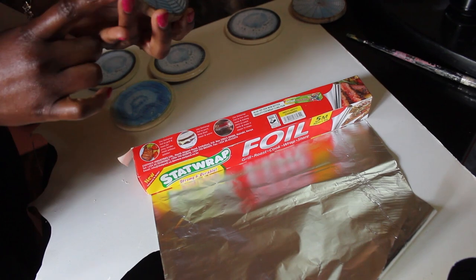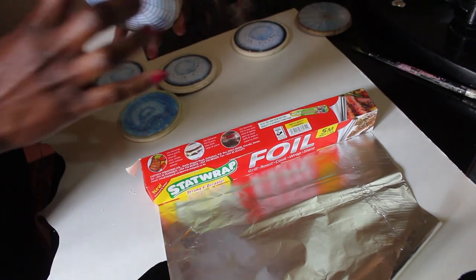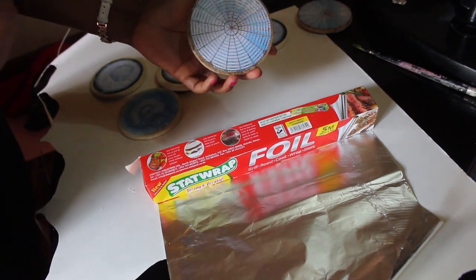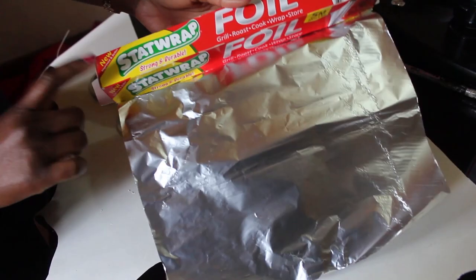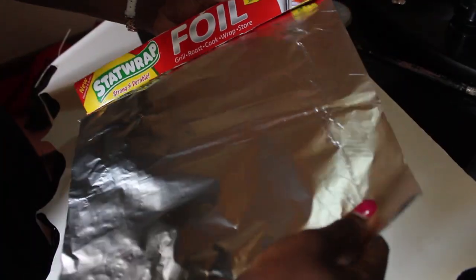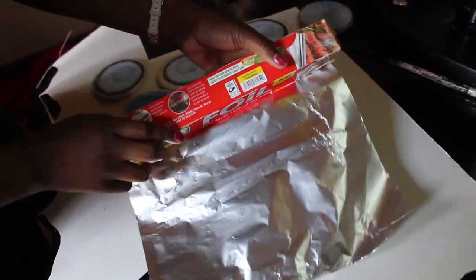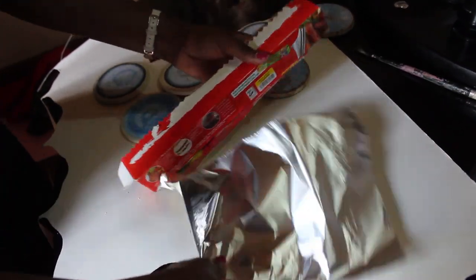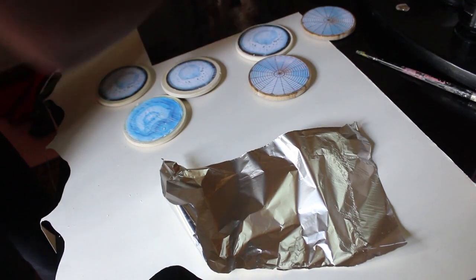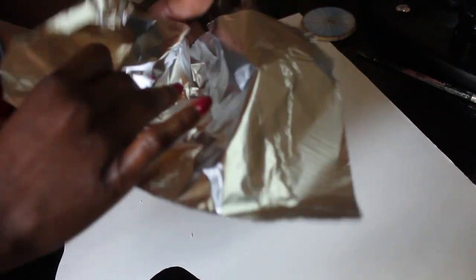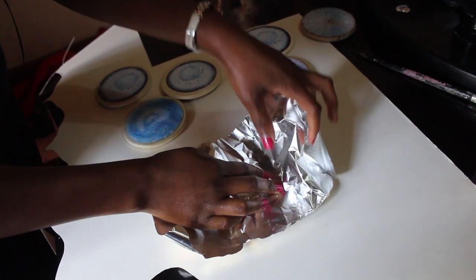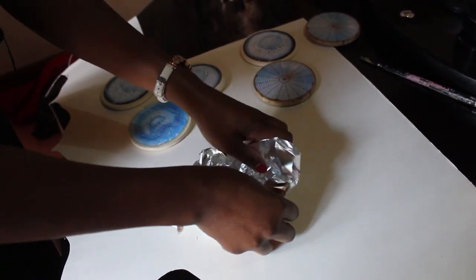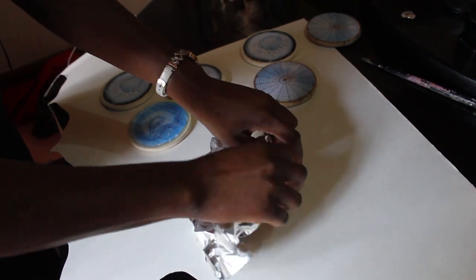I want the sides to be gold, and I don't want it to be straight, I want it to be rugged just like the agate coasters. What you'll do is take a foil paper, just cut a small piece. Cut and then make a small bowl out of it. This is where you're going to spray paint.